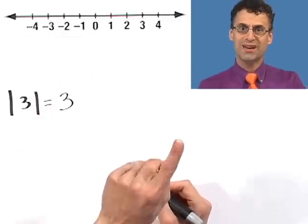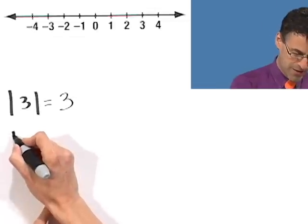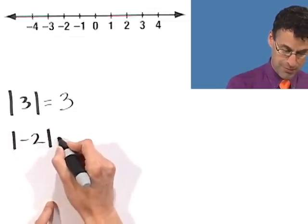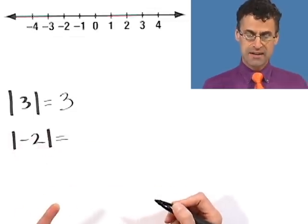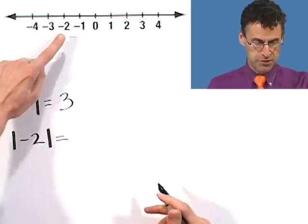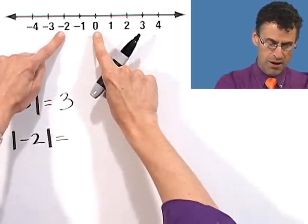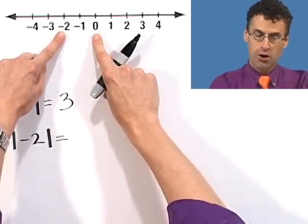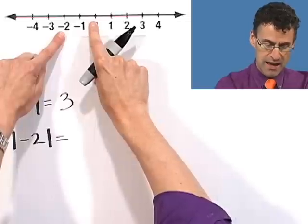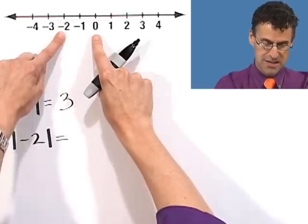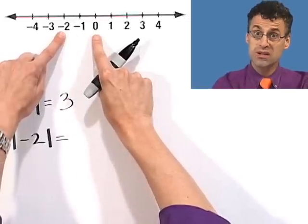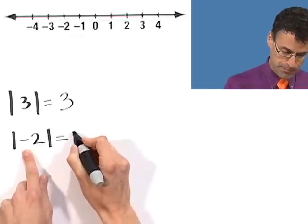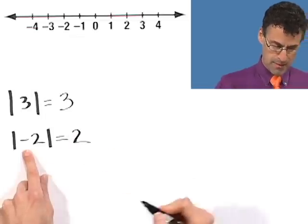Here's the really cool thing. Suppose I want to find the absolute value of negative two. Where's negative two? Negative two is way over here. I want to look at its distance from zero, which means all I care about is how many units away it is. And what I see is that this is actually two units away. So the absolute value of negative two is two.